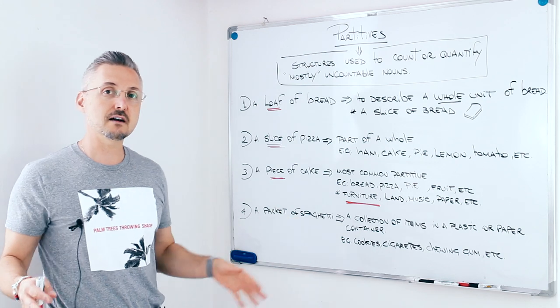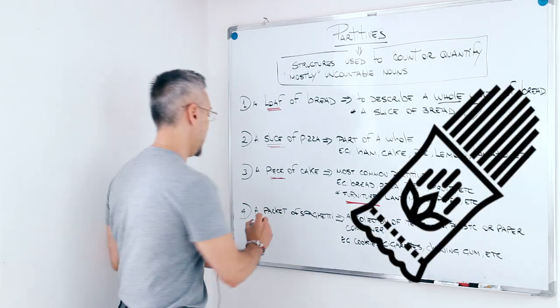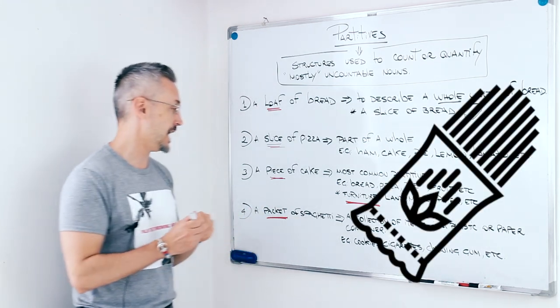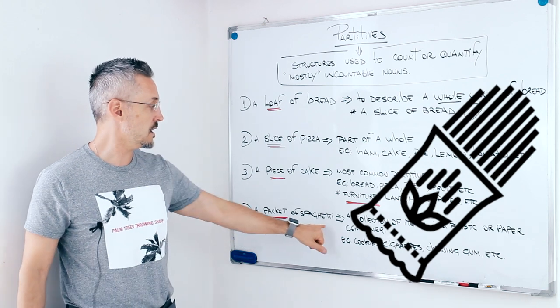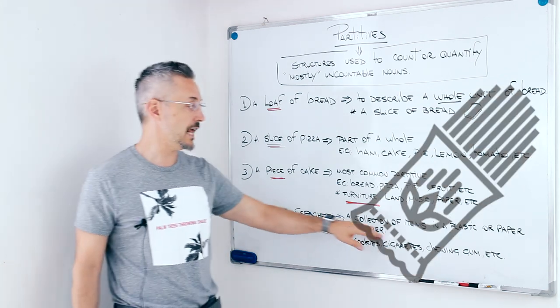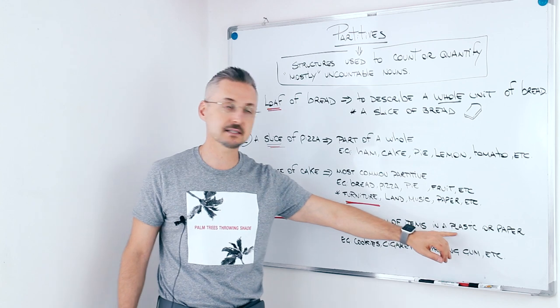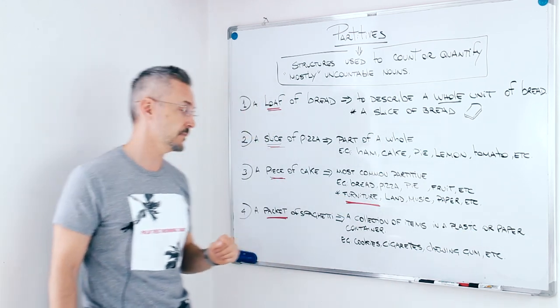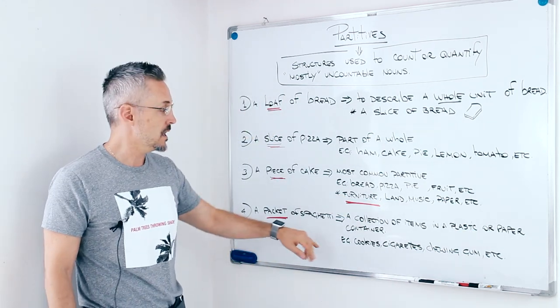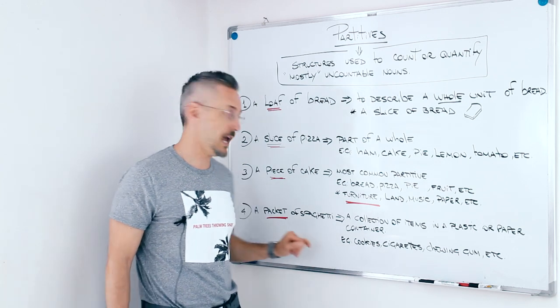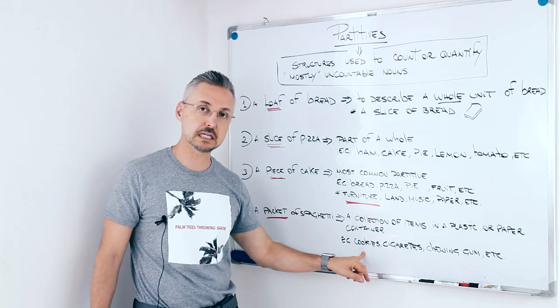Let's check our fourth example. A packet of spaghetti. A collection of items in a plastic or paper container, like spaghetti. For example, cookies. So, a packet of cookies.